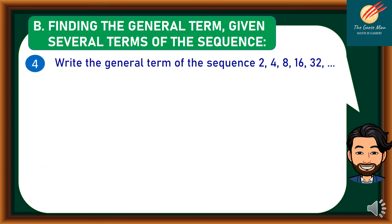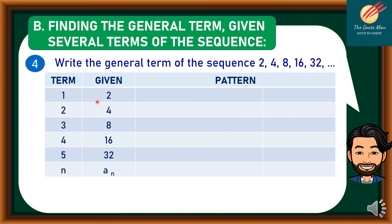For Problem 4, write the general term of the sequence 2, 4, 8, 16, 32, and so on. Listing the terms: the first term is 2, the second is 4, the third is 8, the fourth is 16, and the fifth is 32. Looking at the pattern using exponential form: 2 can be rewritten as 2 to the first power; 4 is 2 to the second power; and 8 is 2 to the third power.